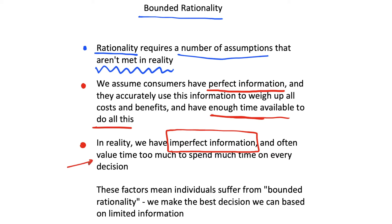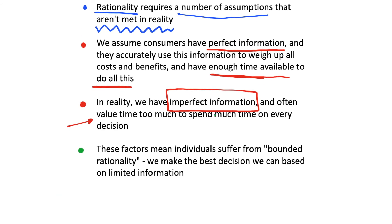There's so much information when making a decision that we just can't expect to know everything, and we value our time too much to spend it all on one decision anyway. As a result, individuals tend to suffer from bounded rationality — we can only be expected to make the best decision we can based on limited information. We try to make an optimizing decision, but this rationality is bounded by the information available and the time we are willing to spend analyzing it.